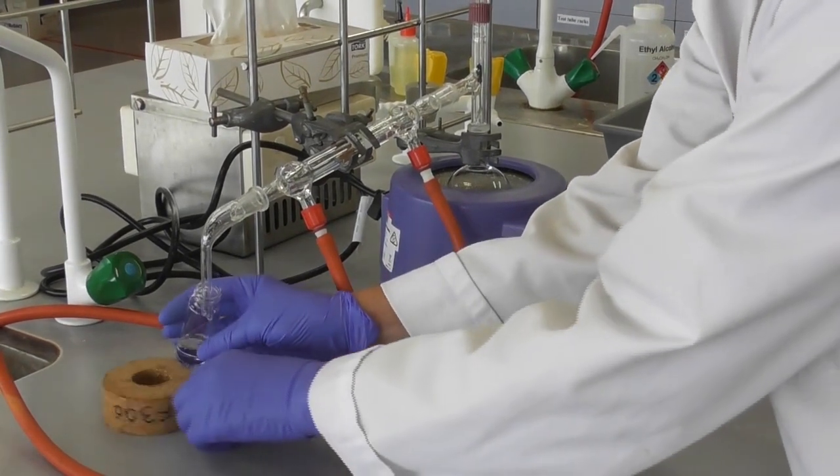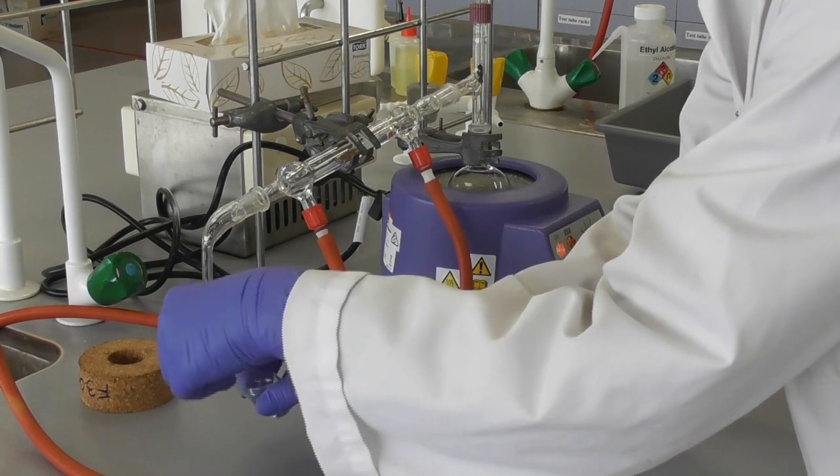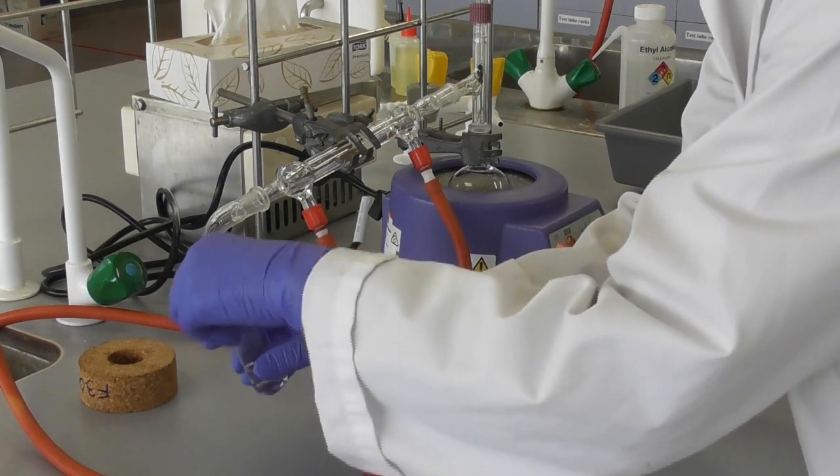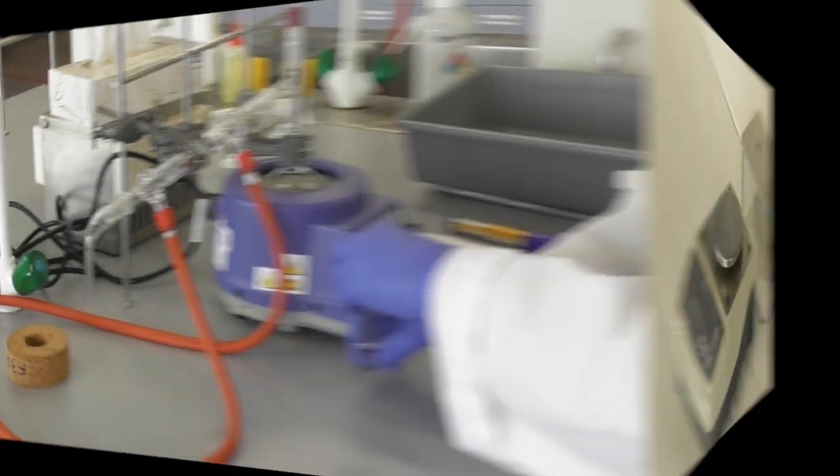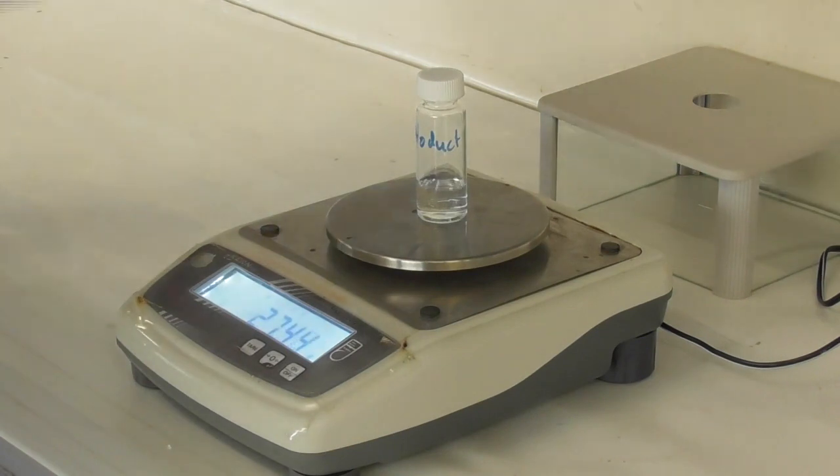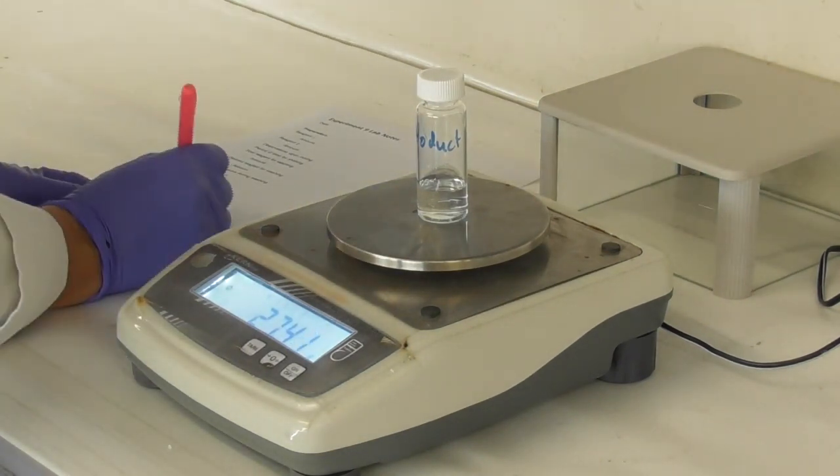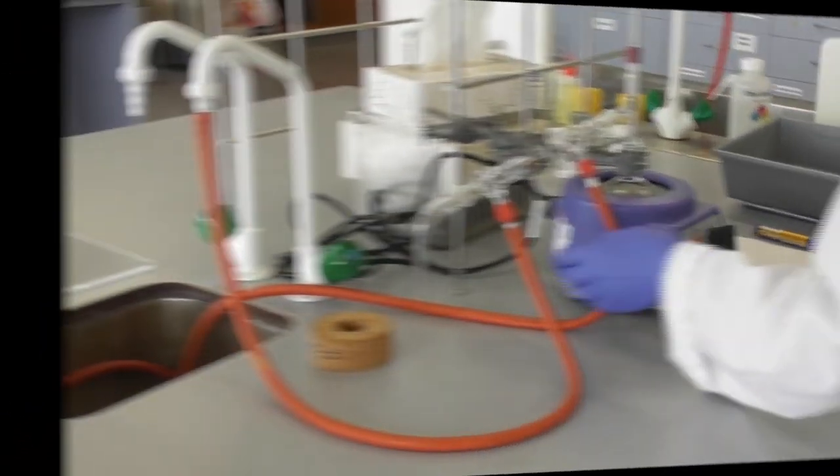Once no more product is coming over or we getting out of the range we stop the distillation and remove the product vial from the end of the outlet. We weigh the filled vial again and can calculate the mass of product.